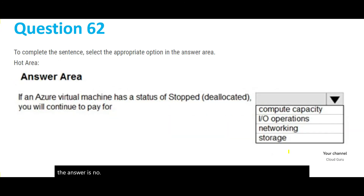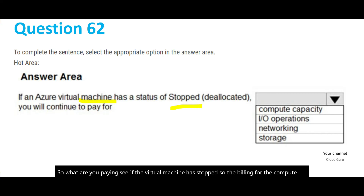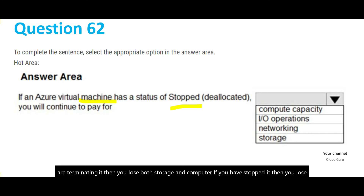The next question asks about an Azure virtual machine with a status of 'stopped' — not terminated, just stopped. If the VM is stopped, billing for compute stops, but billing for storage still continues. Remember: if you terminate it, you lose both storage and compute. If you have stopped it, you lose compute billing but your storage remains and you are still paying for storage.